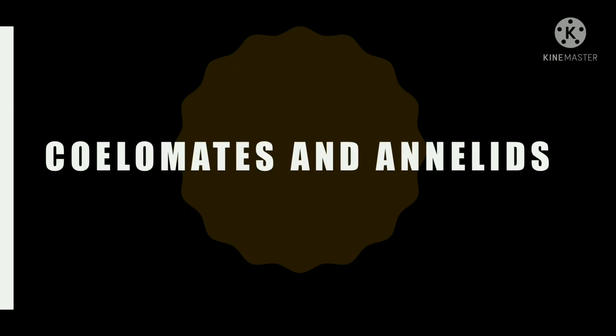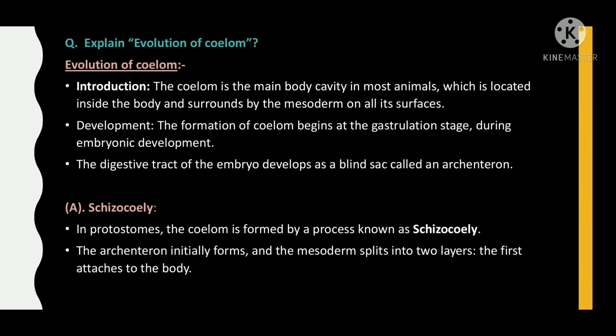Hello friends. In this video we are going to understand about the evolution of the coelom. The coelom is the main body cavity in most animals, which is located inside the body and surrounded by the mesoderm on all its surfaces. The formation of the coelom begins at the gastrulation stage during embryonic development.